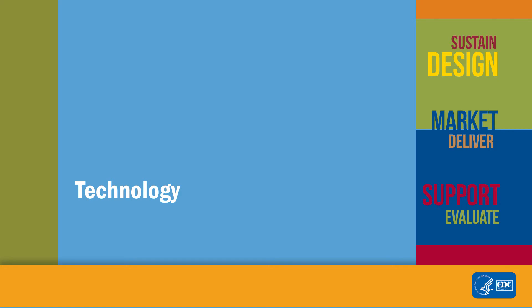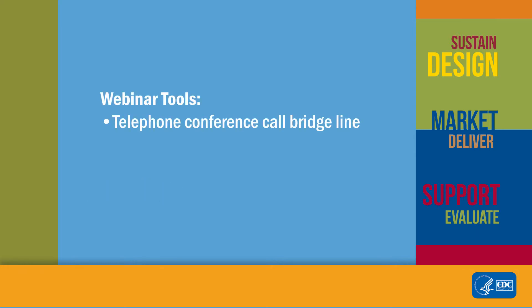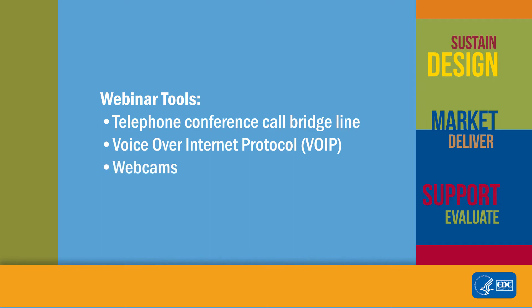While the technology used to deliver a webinar is not as important as the content itself, ineffective technology can distract participants from learning. Webinars can be telephone-only, using a simple conference call bridge line, or they can utilize voice-over internet protocol, or voice-over IP, and allow participants to listen using computer headsets. Synchronous webinars can also incorporate webcams to allow learners to see one another.